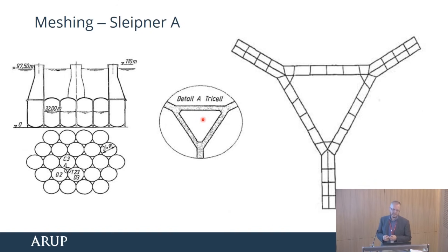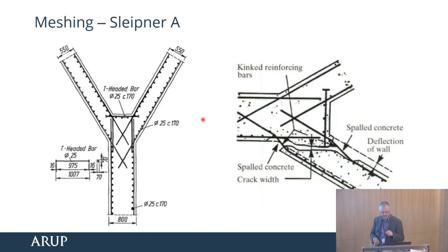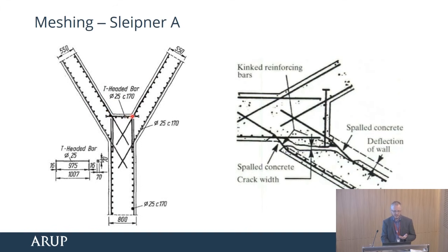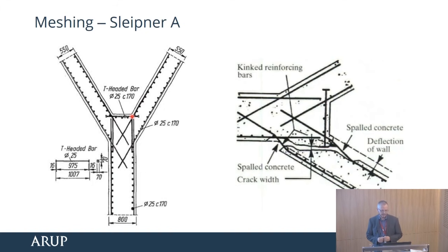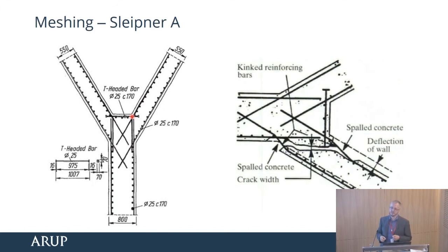50% might have been within factors of safety — possibly. Unfortunately they also detailed it terribly. They knew the stress concentration in the corners, they put a T-headed bar in there, but didn't realise that the shear force would just go right around the end. A previous oil rig had had cracking in these locations but they didn't listen to the warning signs. Second time round, they didn't get away with it. 700 million dollars in 1991 equates to approximately one billion pounds today — not something you want on your PI insurance claim.